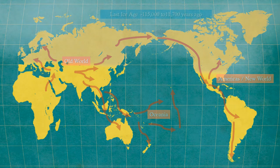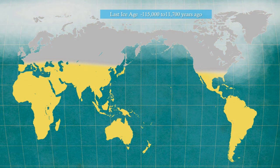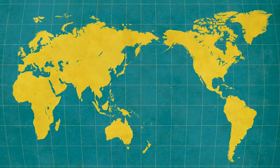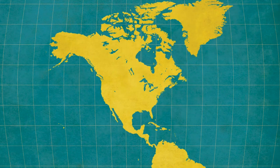When humans entered into the Americas, the world was in the grip of the last ice age. A huge ice sheet covered the northern half of the planet, and so much water was frozen that water levels around the world were much lower than today. North America was connected by a land bridge known as Beringia. Approximately 10,000 years ago, the world began to warm up, the ice melted, water levels rose, and Beringia disappeared. From this point onward, the Americas were cut off from the old world — cut off from developments in technology, language, culture, and disease — allowing indigenous peoples to chart a very different and unique course.